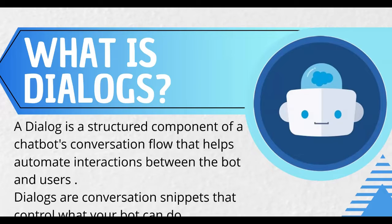During a conversation with a customer, the bot moves between several different dialogues. Each dialogue handles a portion of the conversation. For example, we have a welcome dialogue, a main menu dialogue, an order status dialogue, a location and hours dialogue, and a transfer to agent dialogue. These are the individual dialogues a customer might experience as part of a single conversation with the bot — similar to what you may have experienced when opening a chatbot yourself.